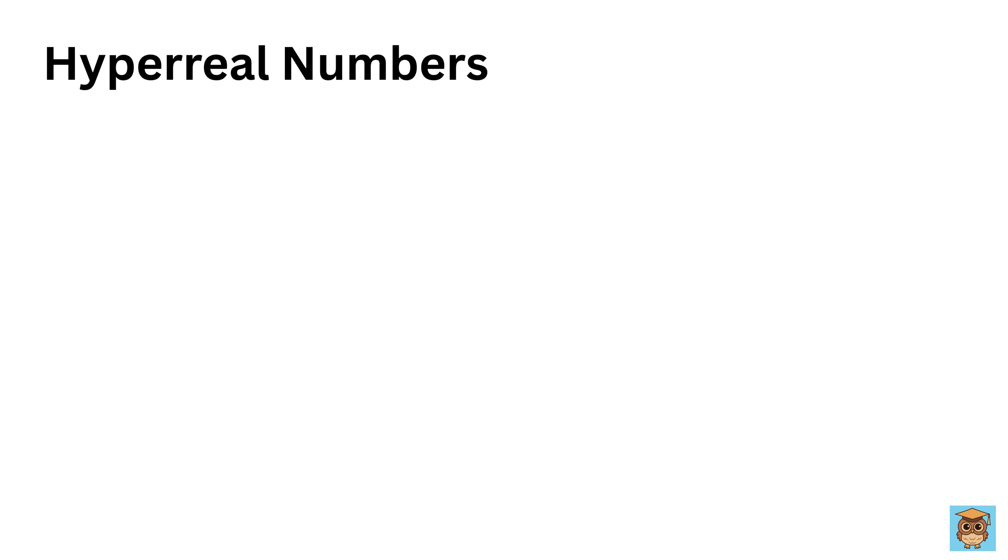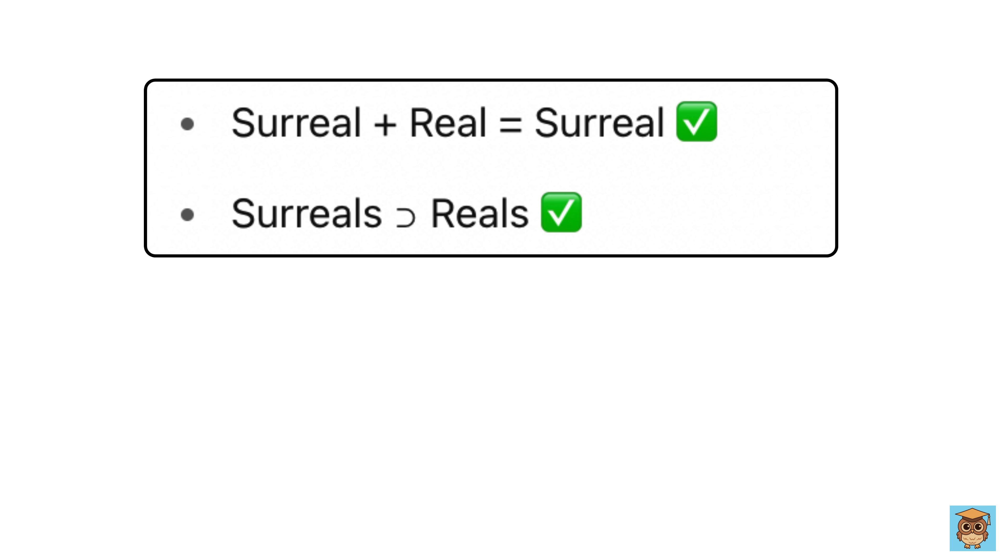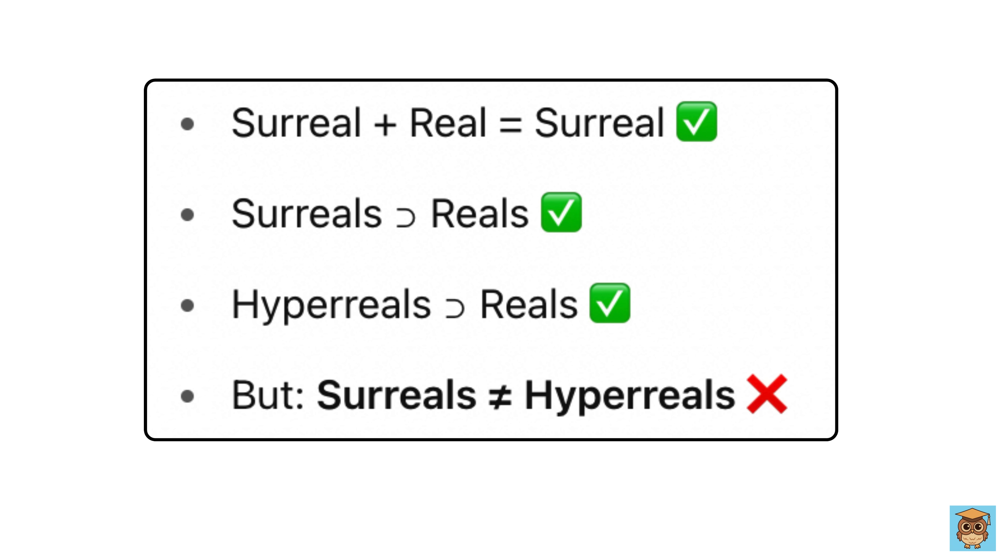Hyperreal numbers, on the other hand, are used in a system that includes numbers that are infinitely large or infinitely small, but are designed to work with calculus more easily. For example, a hyperreal number might be a regular number like five plus an infinitesimal, which is a number so small it's closer to zero than any regular number but still not zero. Hyperreal numbers let us do things like calculate slopes of curves in calculus by treating these tiny or huge numbers as if they're part of the same system as regular numbers.